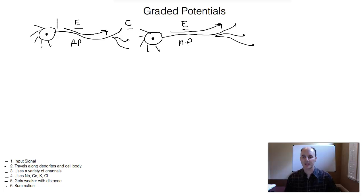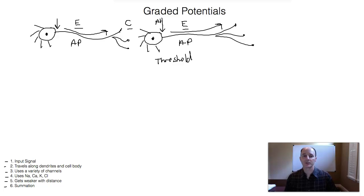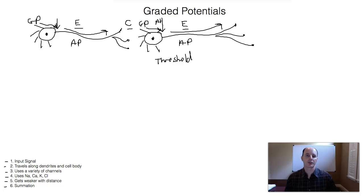But how did the action potential get triggered? What happens at the axon hillock? At the axon hillock, we have to reach something called threshold. Threshold is the voltage that must be reached in order to trigger an action potential. In order to reach threshold, you have to have excitatory signaling — some sort of input signaling that reaches threshold. So we have electrical signals called graded potentials that travel along the dendrites and cell bodies in order to trigger threshold and generate an action potential.